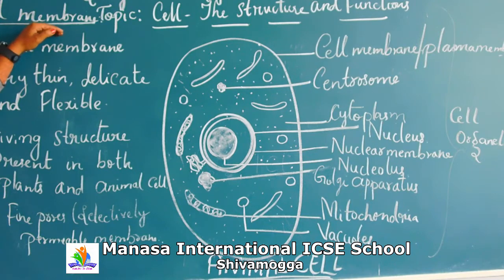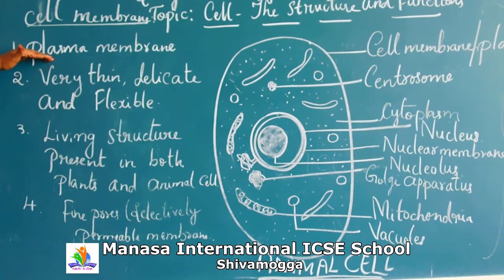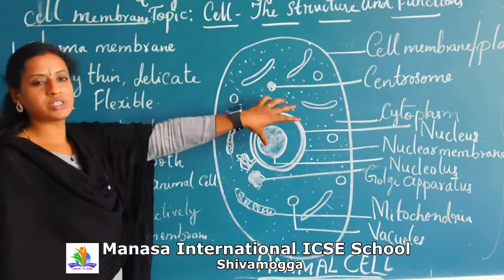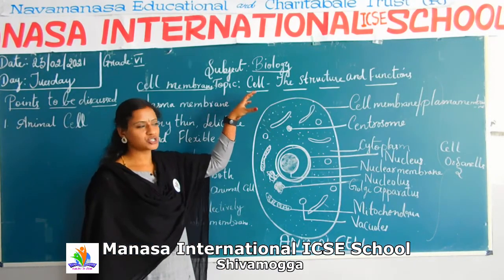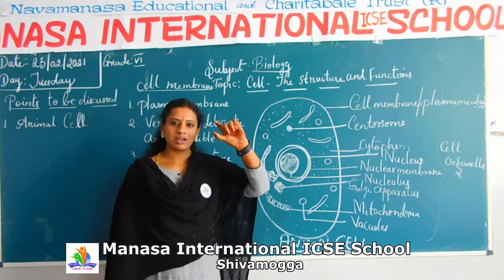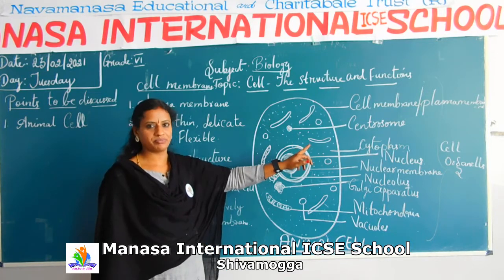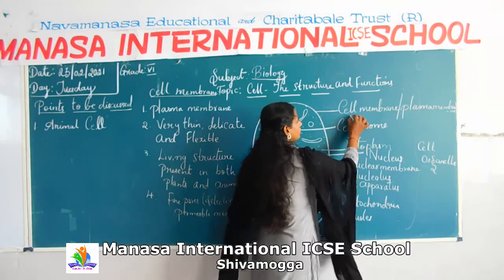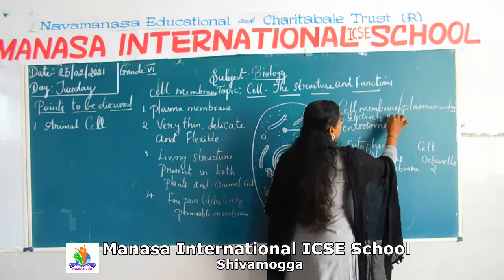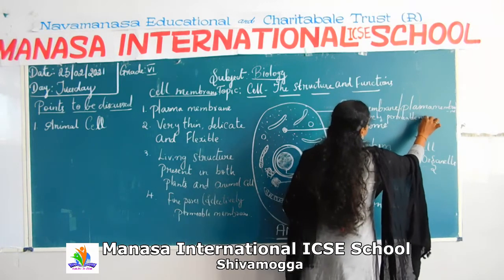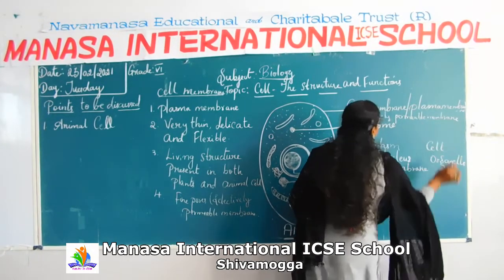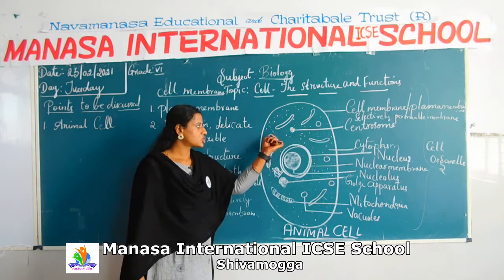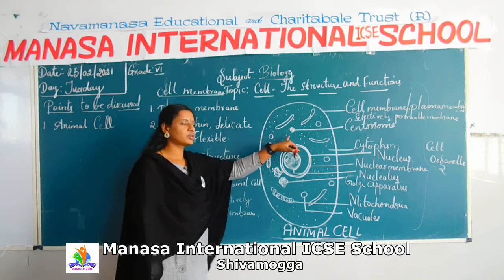Now let's study about the cell membrane. The cell membrane is also known as plasma membrane, and it is also called a selectively permeable membrane. Not all molecules can enter the cell — only selected molecules are allowed to enter into the cytoplasm. Hence the cell membrane is also called the selectively permeable membrane.